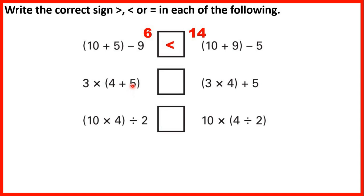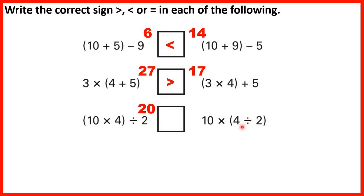Now 3 times (4+5): since 4+5 is in brackets we do that first. 4 plus 5 is 9 and 3 times 9 is 27. Then we have (3×4) plus 5: 3 times 4 is 12, plus 5 is 17. So 27 is greater than 17. And now (10×4) divided by 2: 10 times 4 is 40, and 40 divided by 2 is 20. Then 10 times (4÷2): 4 divided by 2 is 2, and 10 times 2 is 20. So we need an equal sign because we have the same value on both sides.